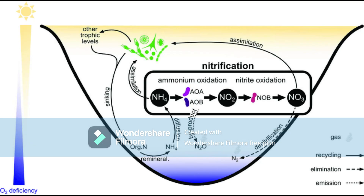Next, what is an oxidizing agent? It's an element that attracts electrons from a compound. Oxygen is the most effective oxidizing agent. There are also less effective oxidizing agents that can be used when there is no oxygen — for example, nitrogen is used as the oxidizing agent during the denitrification process.